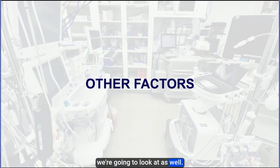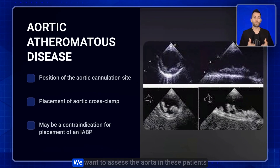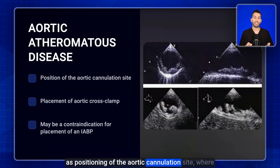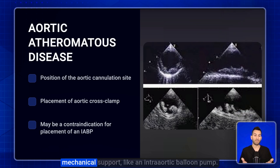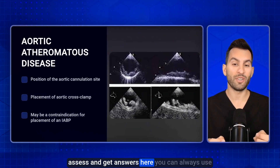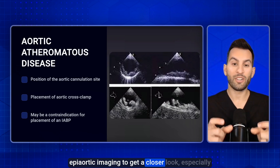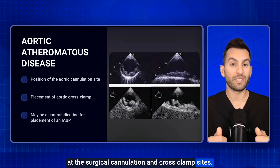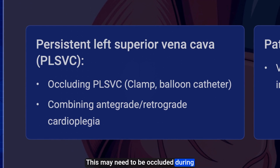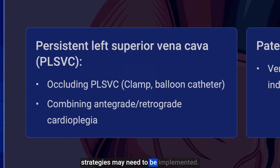We also want to assess the aorta in these patients, as it can help determine positioning of the aortic cannulation site, where the surgeon places their aortic cross-clamp, and potential contraindications to mechanical support such as an intra-aortic balloon pump. Epiaortic imaging can be used for a closer look at surgical cannulation and cross-clamp sites. Additionally, we try to rule out a persistent left SVC, as this can affect cardioplegia administration strategy and may require occlusion with a clamp or balloon catheter, or alternative cardioplegia strategies.